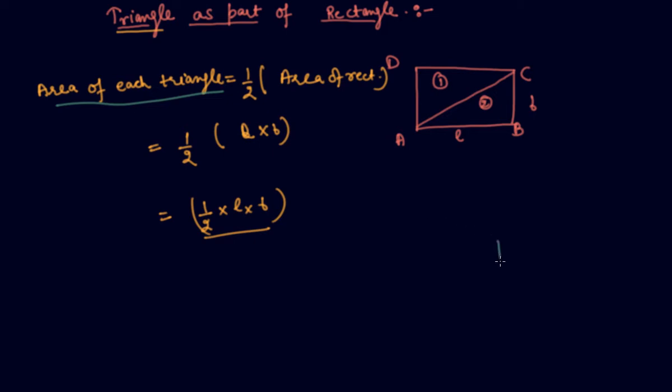And in case of square, square is a special case of rectangle. Let's say if I join these two diagonals. My drawing is not that good students so kindly bear with me that this is a square ABCD. Let me draw this part again.